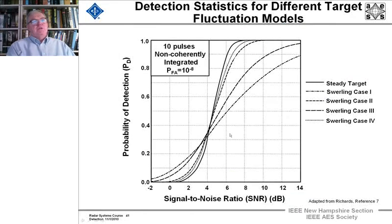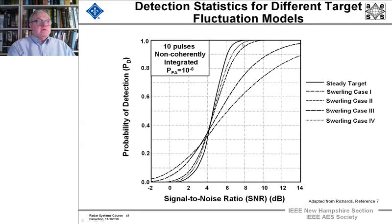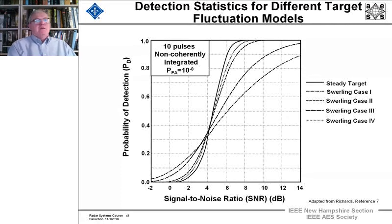When we look at 10 pulses, you can see the integration loss: a steady target and Swerling case 4 is up here, Swerling case 1 is way out here — so there's a huge fluctuation loss. You can see that changing the frequency to make the targets independent from pulse-to-pulse improves performance considerably. This is with a probability of false alarm of 10 to the minus 8.